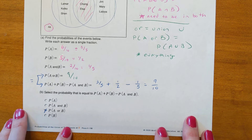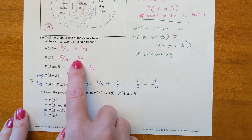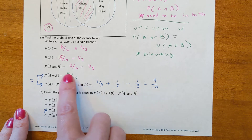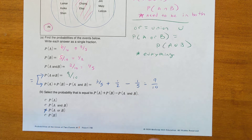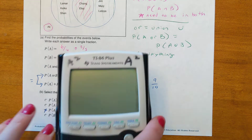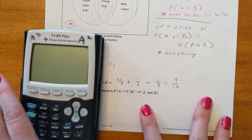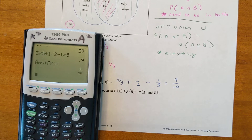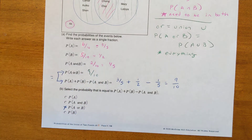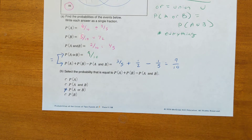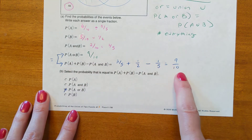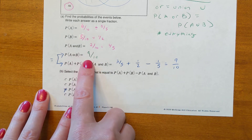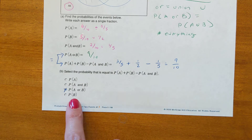In both circles there are nine names out of ten — only Allie is outside. The next part asks us to compute: P(A) + P(B) − P(A∩B) = 3/5 + 1/2 − 1/5. Using a calculator — three divided by five plus one half minus one fifth, then Math → Enter → Enter to convert to a fraction — gives nine-tenths. This equals P(A or B), confirming the addition rule: P(A∪B) = P(A) + P(B) − P(A∩B).